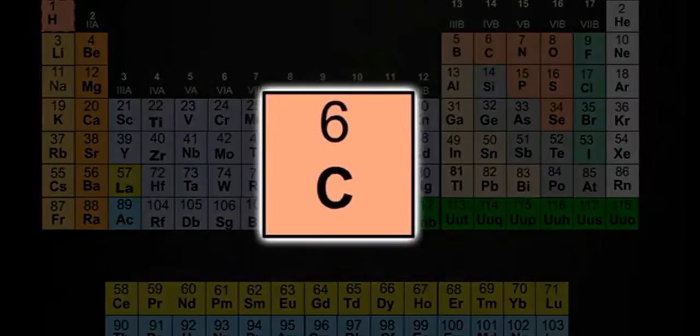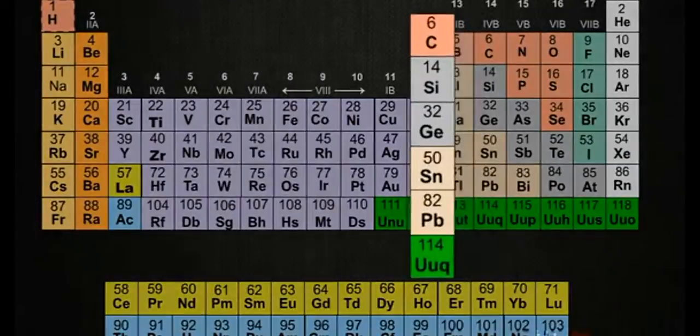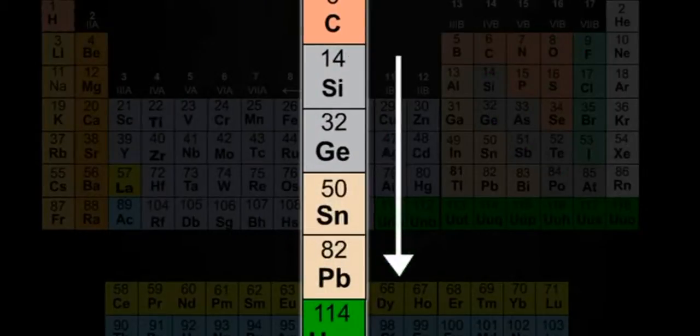Carbon shows maximum catenation in its group. On moving down the group, the catenation tendency decreases. Because of catenation, carbon atoms can link with each other to form a large variety of compounds.